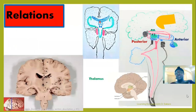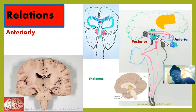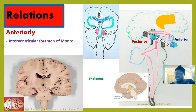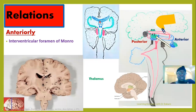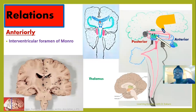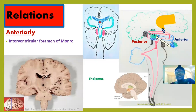Now let's look at the anterior relations. The first structure located anterior to the thalamus is the interventricular foramen of Monro. This connects the lateral ventricle to the third ventricle. We have two interventricular foramina because we have two lateral ventricles. If a coronal section is taken along the alignment of the thalamus, different structures are visible. The plane must fall in alignment to the region where the thalamus is positioned.